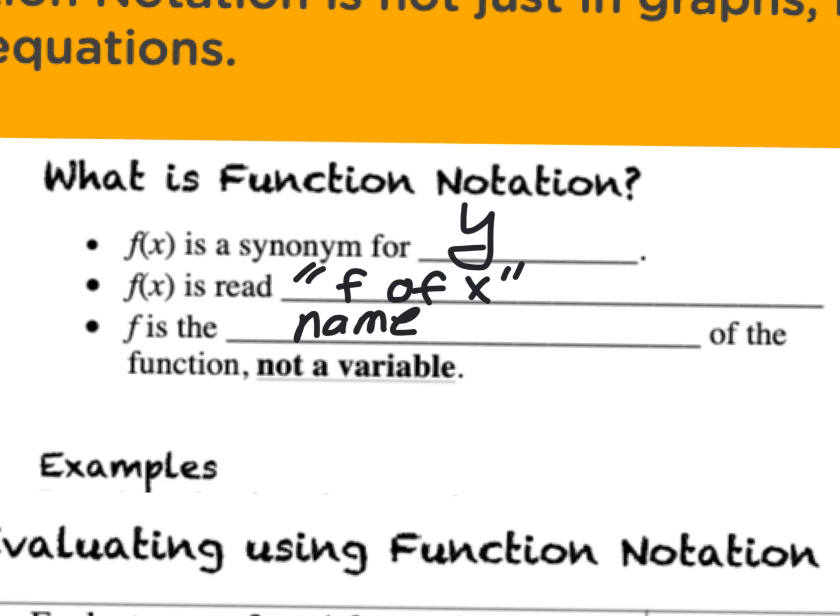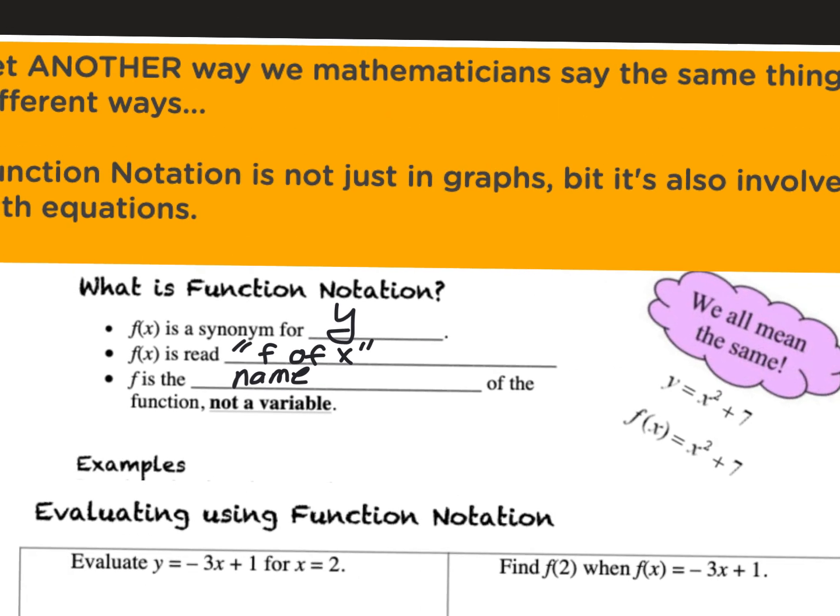Yesterday I talked about how if the equation represents height, sometimes we use an H, sometimes we use a G. You see G of X a lot for no reason. The F literally just tells you the name of the function and it's just another way of saying Y. This little graphic here shows we are all the same - those two mean exactly the same thing.